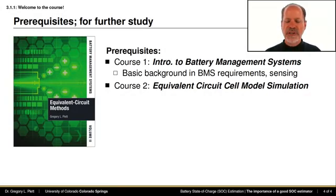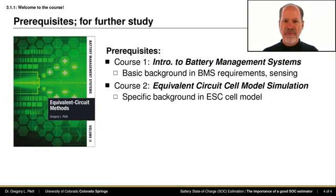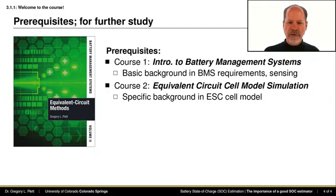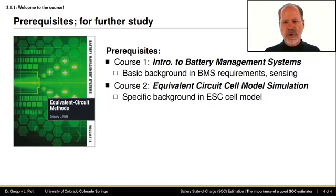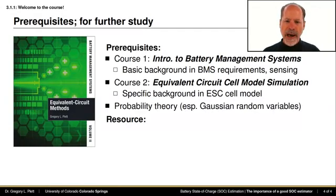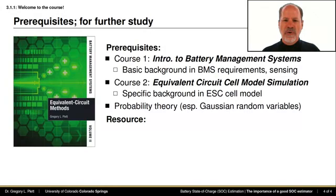The second course in this specialization is titled Equivalent Circuit Cell Model Simulation. The prerequisite knowledge from that course that we depend on very heavily comprises a detailed background in the enhanced self-correcting circuit model that describes the dynamics of lithium-ion battery cells, and knowing how to use the specific Octave toolbox of helper routines that work with this cell model. You will also depend on a background in probability theory, and especially in what is called a Gaussian random variable, or sometimes a normally distributed random variable.